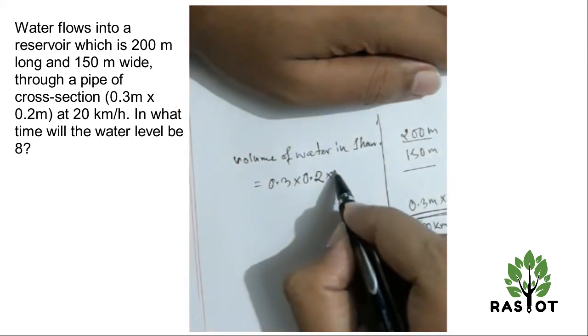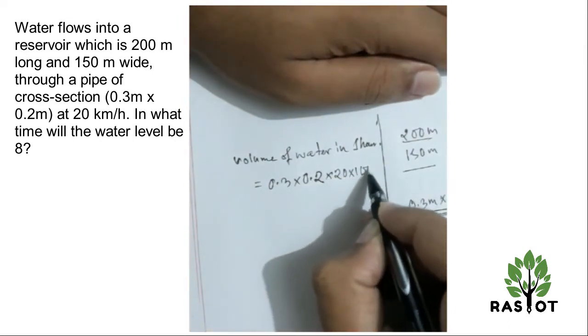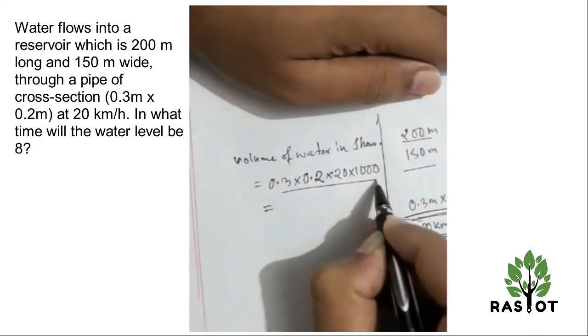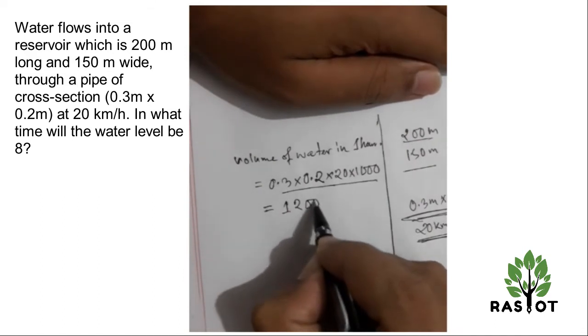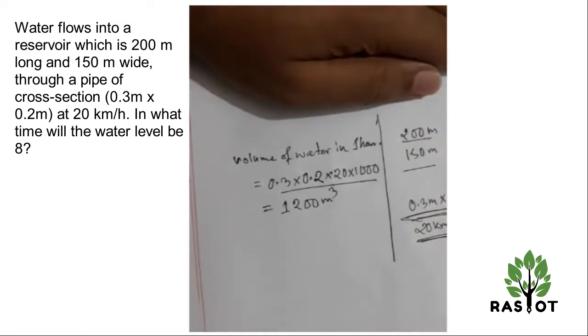So converting to meters, this becomes 20,000. So per hour, if I multiply, I'm going to get 1200 cubic meters.